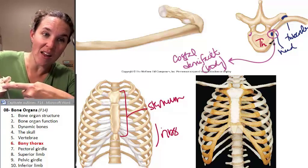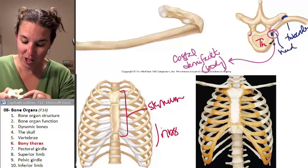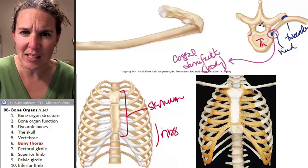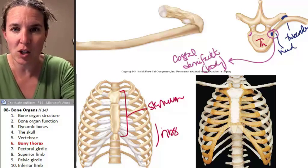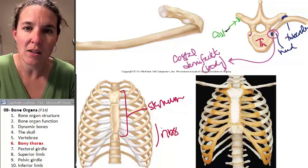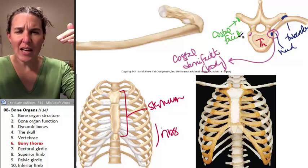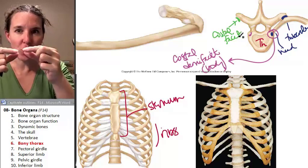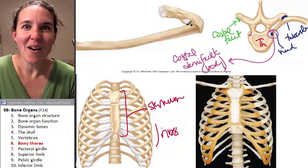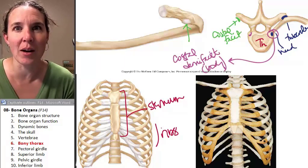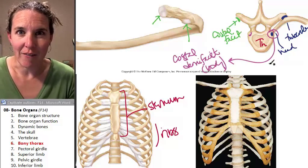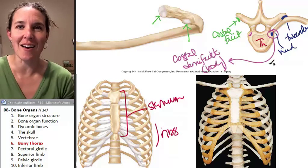The head of the rib attaches there, and then the tubercle of the rib attaches to a facet on the transverse process — that's the costal facet. The costal facet on the transverse process of the thoracic vertebra articulates with the tubercle of the rib. The head of the rib articulates with the costal demifacet on the body of the thoracic vertebra.